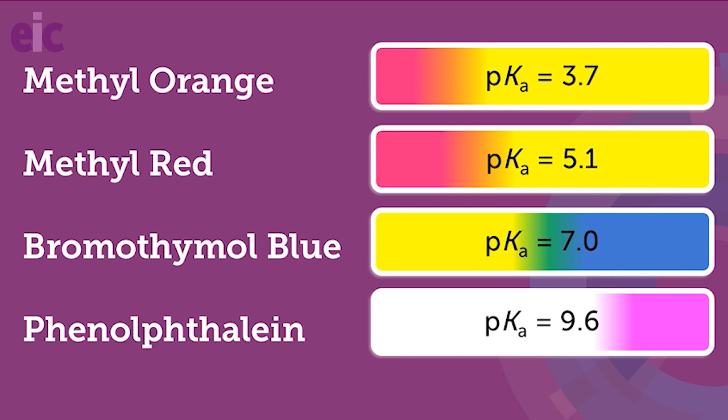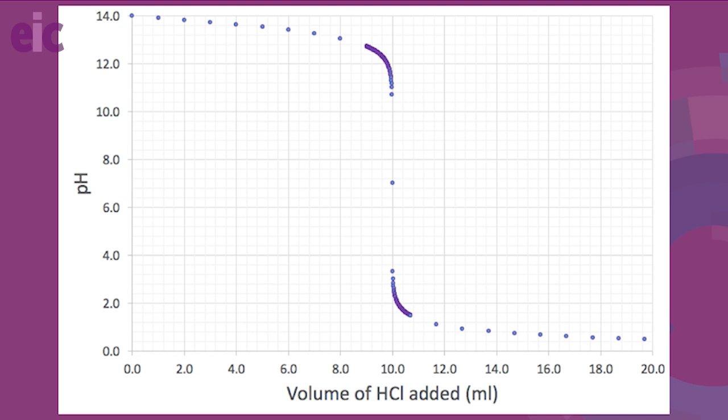These change colour at different pHs, and the pKa value of an indicator will tell you the pH at which half of the indicator molecules exist as one colour, and half of them exist as another. If you want to do a titration, then you need to try to match the pH of the colour change with the point where you've added the volume of titrant required to completely react with the contents of the conical flask beneath, what we call the equivalence point.